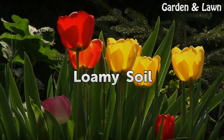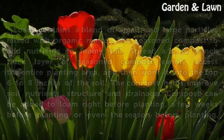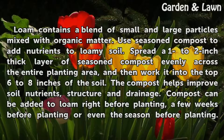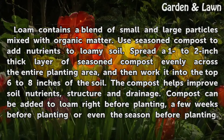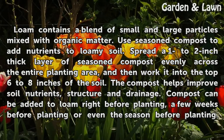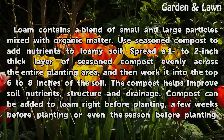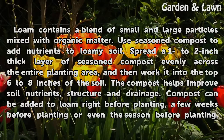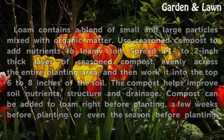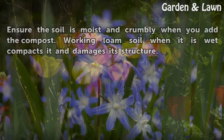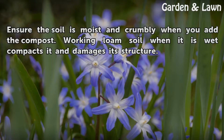Loam contains a blend of small and large particles mixed with organic matter. Use seasoned compost to add nutrients to loamy soil — spread a 1 to 2 inch thick layer of seasoned compost evenly across the entire planting area and work it into the top 6 to 8 inches of soil. The compost helps improve soil nutrients, structure, and drainage. Compost can be added to loam right before planting, a few weeks before, or even the season before. Ensure the soil is moist and crumbly when you add the compost, as working wet loam compacts it and damages its structure.